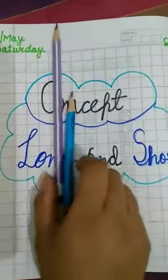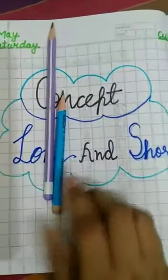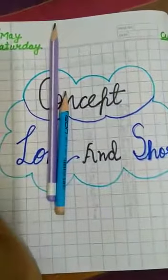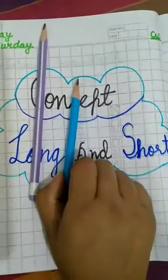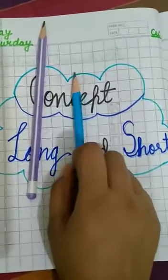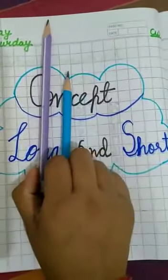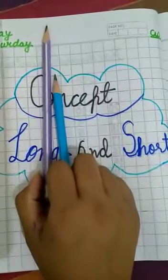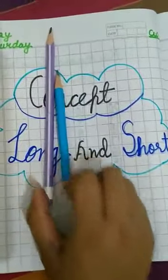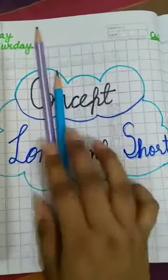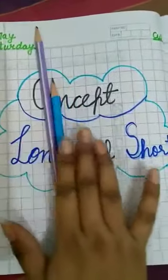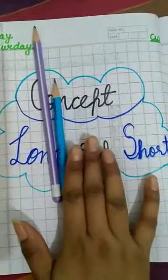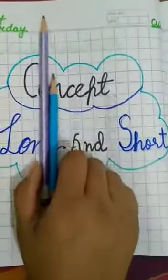For example, the blue pencil is short and the purple pencil is long. So here one pencil is long and the other is short. This is the concept of Long and Short — two things, same things.